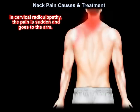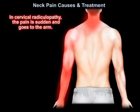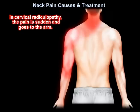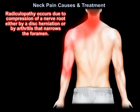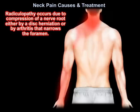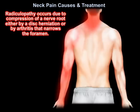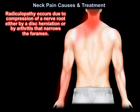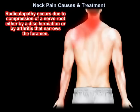In cervical radiculopathy, the pain is sudden and goes to the arm. Radiculopathy occurs due to compression of the nerve root, either by disc herniation or by arthritis that narrows the foramen.